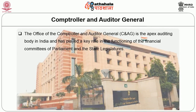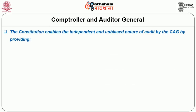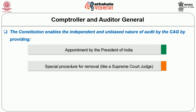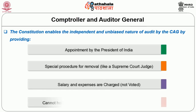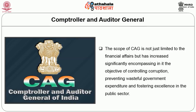The Office of Comptroller and Auditor General is the apex auditing body in India and has played a key role in the functioning of financial committees of Parliament and state legislatures. The CAG ascertains whether monies disbursed were legally available and applicable to the service or purpose to which they have been applied, and whether expenditure confirms to the authority which governs it. The Constitution enables the independent and unbiased nature of audit by the CAG through appointment by the President of India, special procedure for removal like a Supreme Court judge, salary and expenses charged but not voted, and a bar on holding any other government office after the term expires. Today the scope of CAG encompasses controlling corruption, preventing wasteful expenditure and fostering excellence in the public sector.